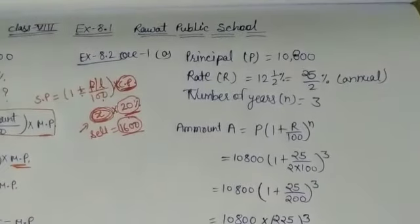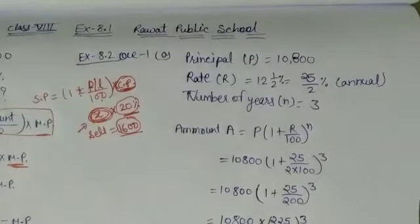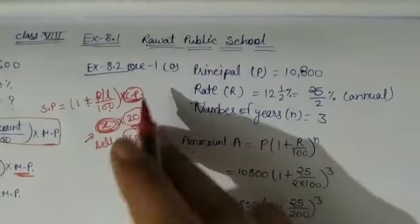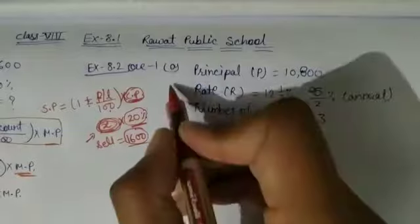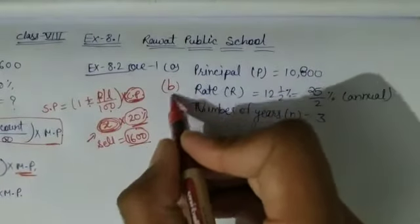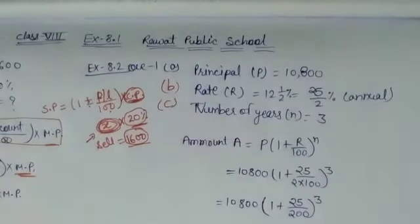Now, moving on to question number 1, A part, in exercise 8.2. A part, B part, C part — so you have to complete B and C part as homework.